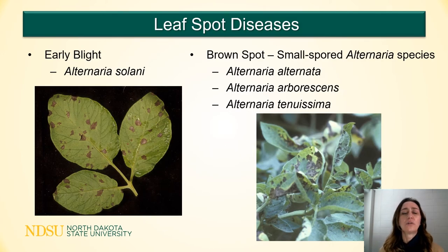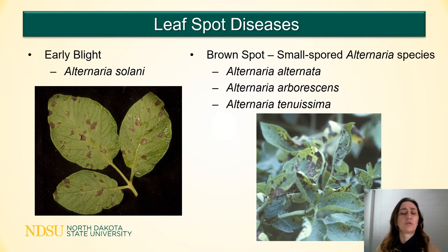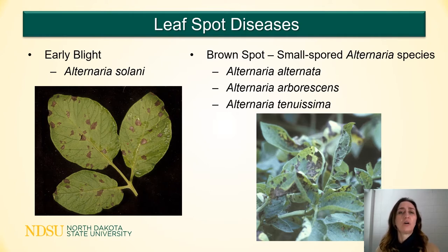There are several foliar diseases of potatoes, but I'm going to focus on early blight and brown spot. These are both caused by Alternaria species. Early blight is caused by Alternaria solani, and brown spot is caused by what we now know as a complex of at least three Alternaria species: Alternaria alternata, Alternaria arborescens, and Alternaria tenuissima.